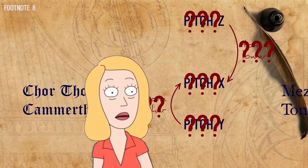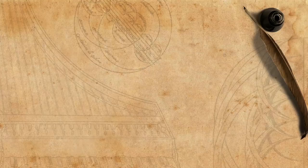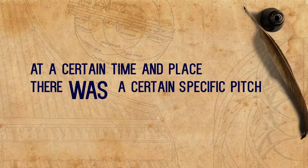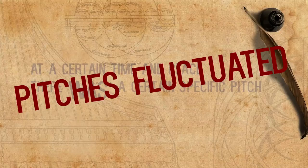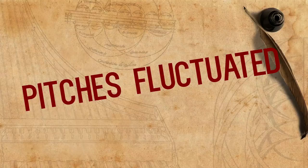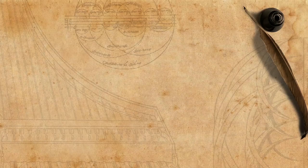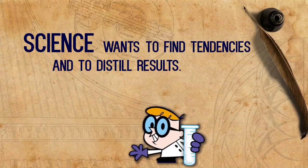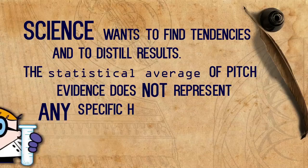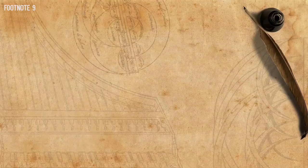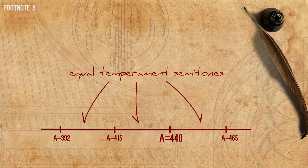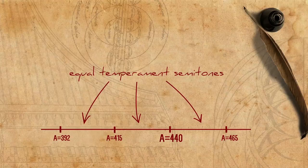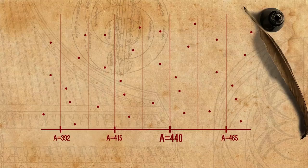Sixth, modern research is based on the assumption that at a certain time and place there was a specific pitch. But because of the physics of musical instruments, pitches fluctuated, and even within closed ecosystems different pitches were co-existent. Now, the statistical average of pitch evidence does not represent any specific historical situation. In most research the universal reference point is A equals 440, with steps of equal temperament semitones above and below it. Apart from the fact that equal semitones are an arbitrary choice when dealing with historical contexts, the reduction of evidence to such a rough grid takes us further away from truly historical pitches.